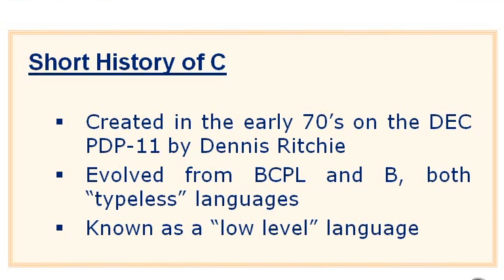Most of Unix and Linux are actually written in the C language. C evolved from languages called BCPL and B, which were from the late 60s and early 70s, and they were both typeless languages. C has its own data types like integers, characters, and various floating point precision variable types, and we'll see how to use those later.